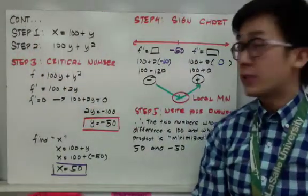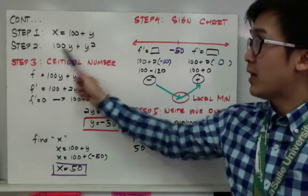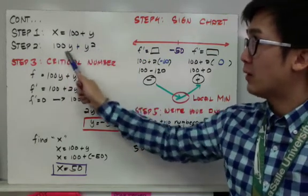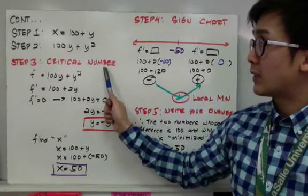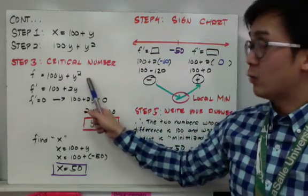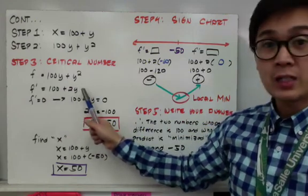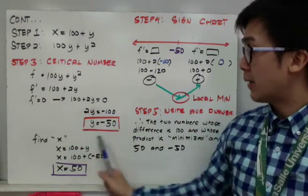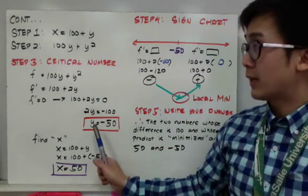Hindi pa tapos yung ating optimization problem. Yung step one, meron tayong equation na x equal to 100 plus y. At yung second step, 100y plus y squared, based sa second part ng question. Yung step number three is to find the critical value or critical number based sa function ng ating second step. Yung function natin is 100y plus y squared. We just need to find the first derivative, kaya meron tayong 100 plus 2y. Since kailangan natin yung critical number, set this to zero. So y equals negative 50. Ito yung critical number na gagamitin natin para makuha yung maximum or minimum.